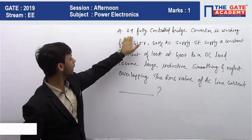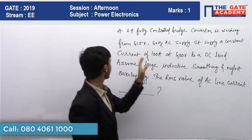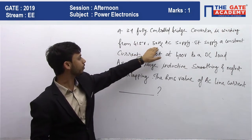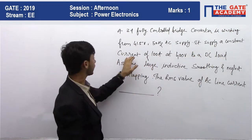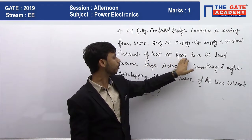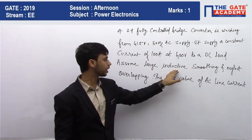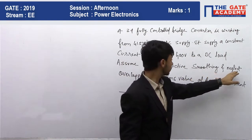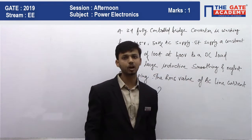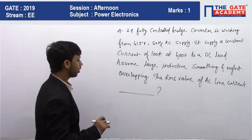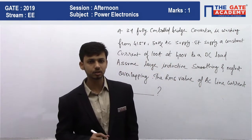The question is as follows: a three-phase fully controlled bridge converter is working from a 415 volt, 50 Hz AC supply. It supplies a constant current of 100 ampere at 400 volt to a DC load. Assuming large inductive smoothening and neglecting overlapping — large inductive smoothening means the output current is constant. We have to find the RMS value of the AC line current.